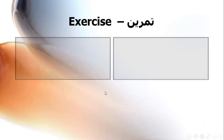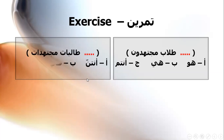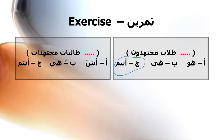Exercise: طلاب مشتهدون — do we use هو، هي، or أنتم? And طالبات مشتهدات — do we use أنتن، هي، or أنتم? The answer for طلاب مشتهدون is أنتم. The answer for طالبات مشتهدات is أنتن — this is for female plural. هي is for the third person feminine singular, so أنتن is correct.